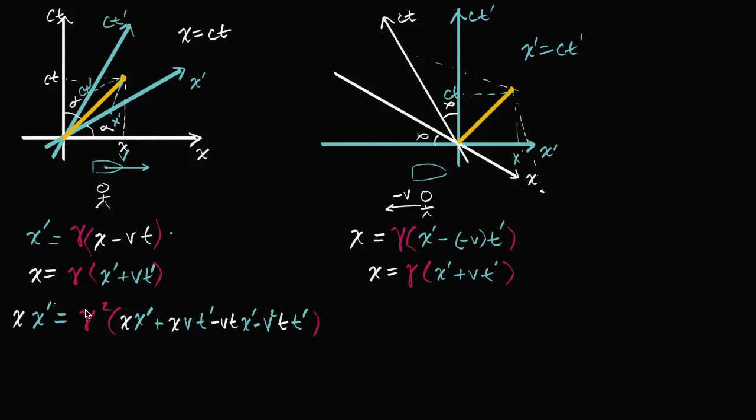We left off in the last video trying to solve for gamma. We set up this equation and then we had the insight that we could pick a particular event that is connected by a light signal. And in that case, x would be equal to ct, but also x prime would be equal to ct prime.